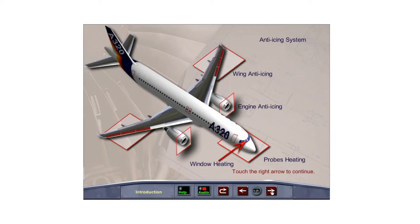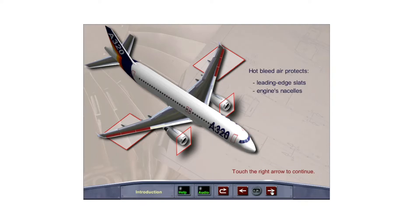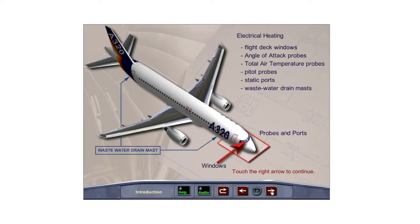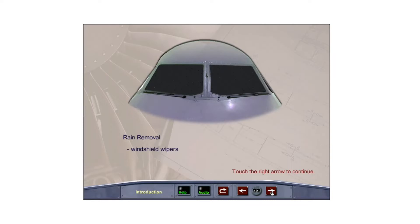The anti-icing system consists of wing anti-icing, engine anti-icing, window heating, and probes heating subsystems. Hot engine bleed air is used to anti-ice the wing slats and the engine nacelles. Electrical heat is used to anti-ice the flight deck windows, the angle of attack probes, the total air temperature probes, the pitot probes, the static ports, and the wastewater drain masks. Wipers are used to remove rain from the front windshield panels.